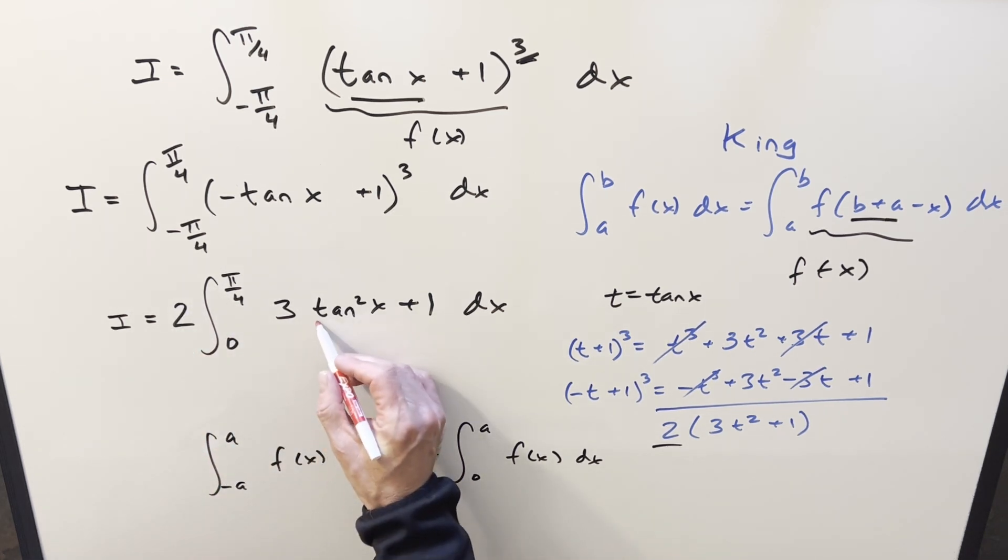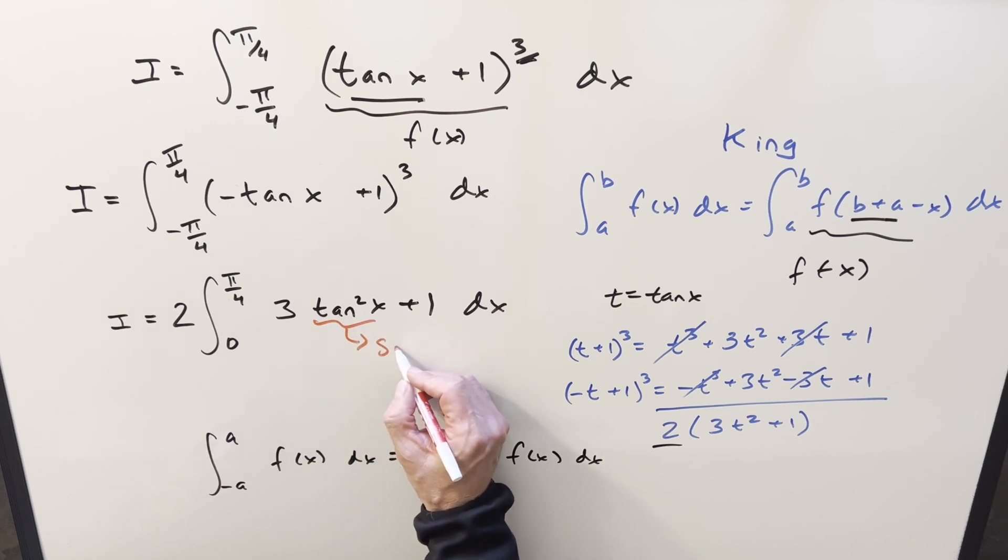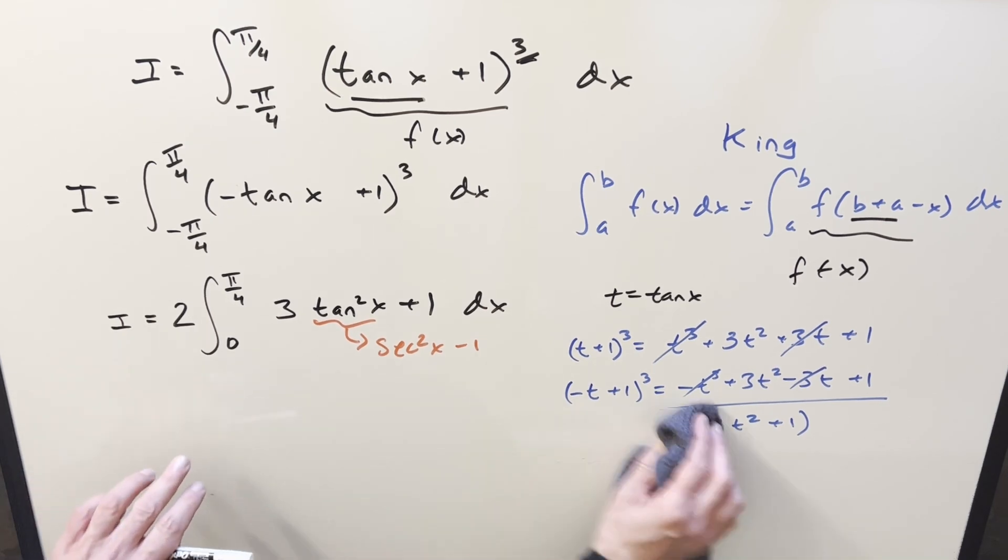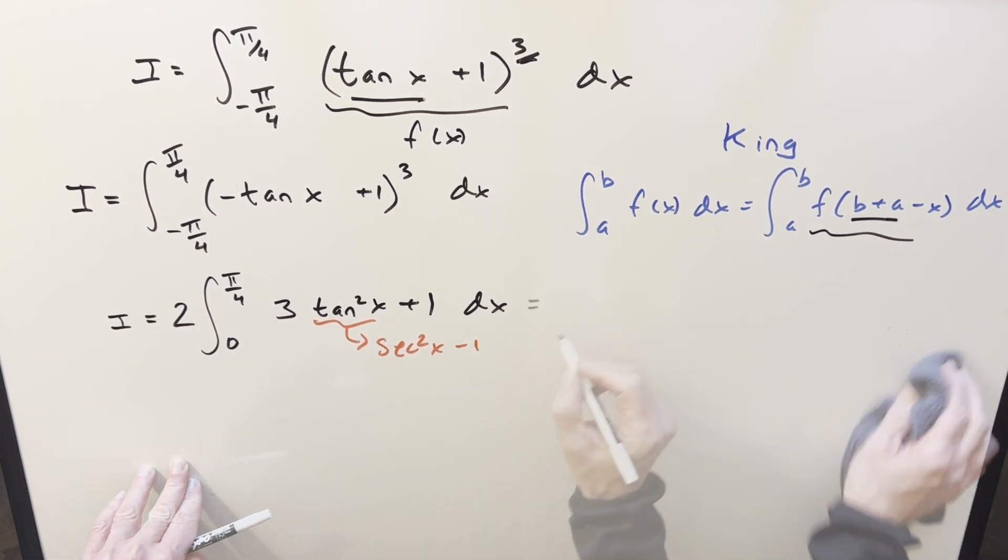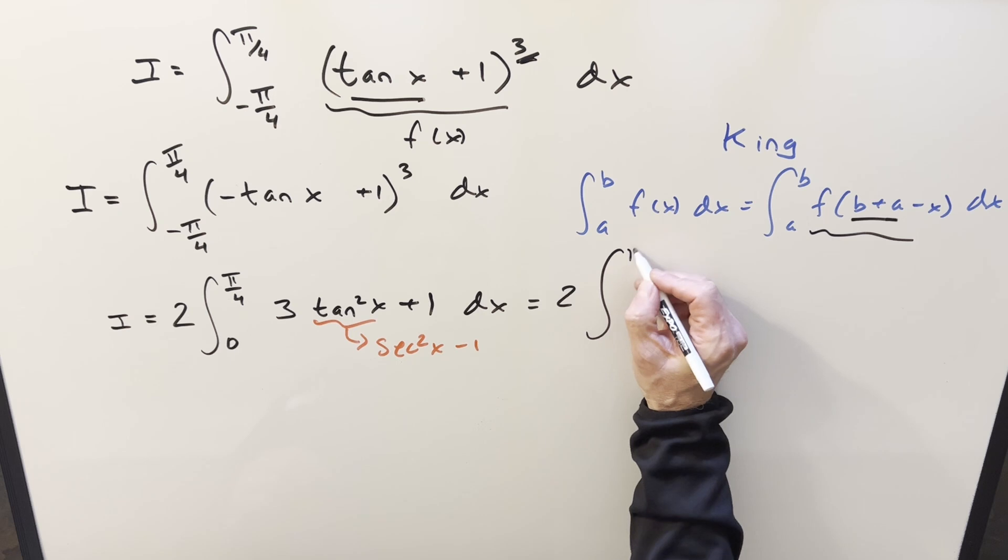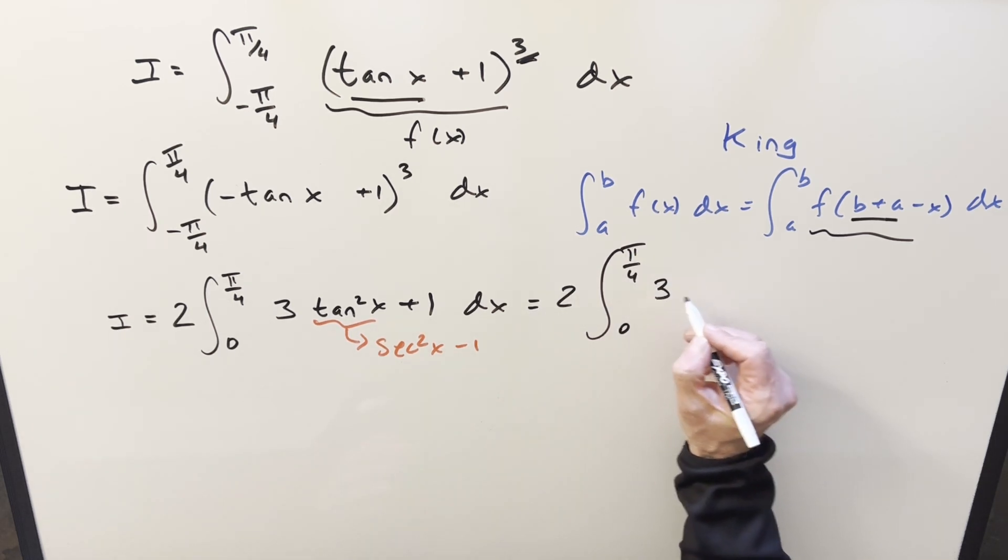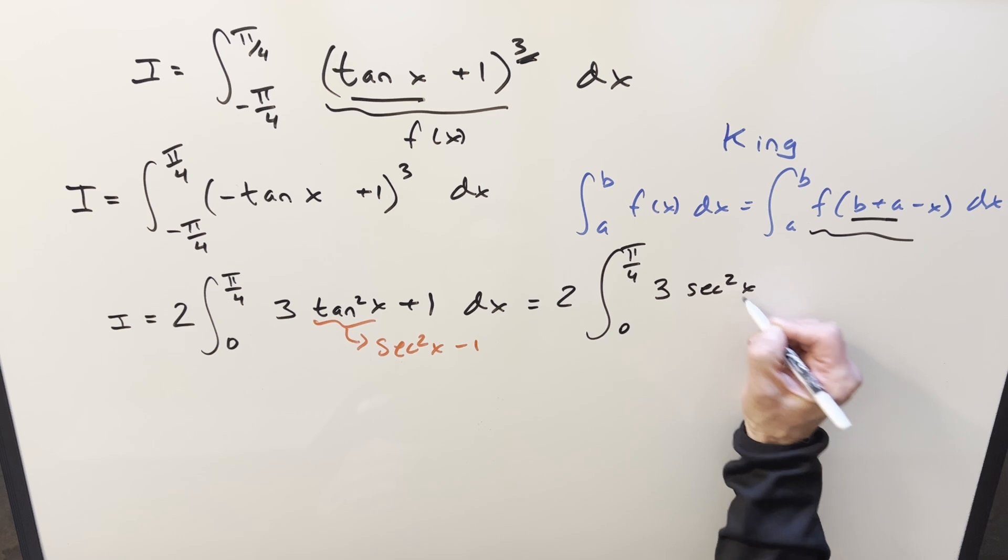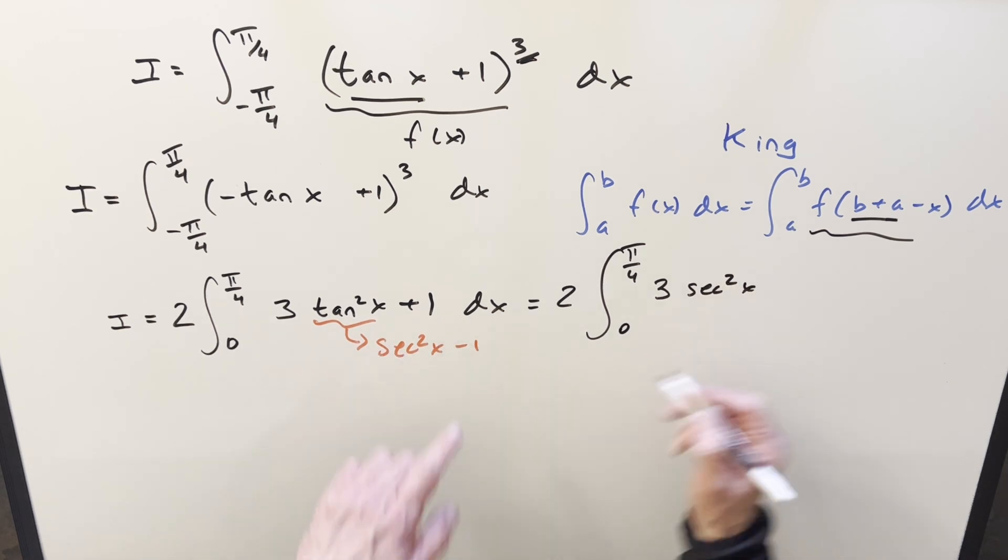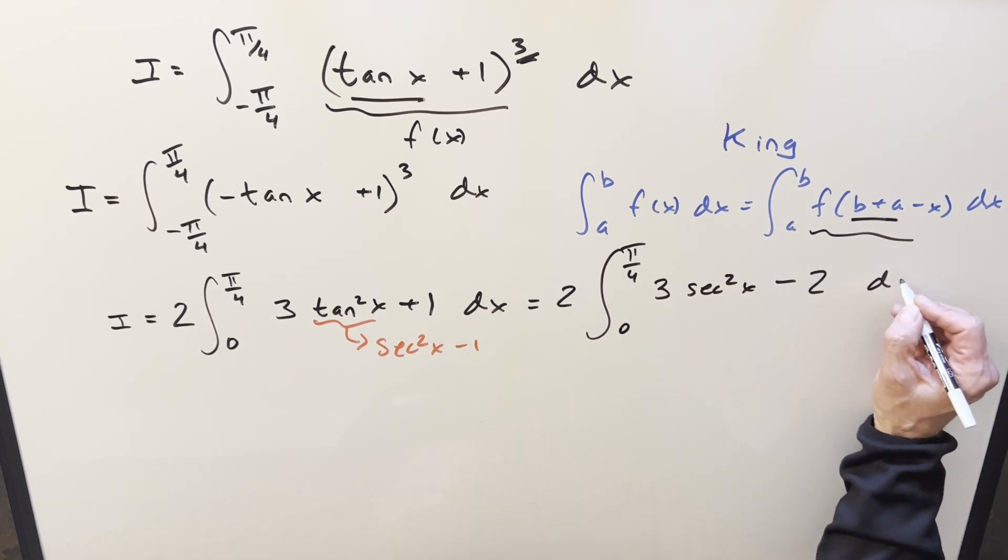And then for tan squared, let's just use the identity here. Tan squared is the same thing as secant squared x minus 1. So let me make a little space and see if we can bring this all together. What I'll do is we'll have our 2 out front. Then just need to distribute in the 3. So we have 3 secant squared x minus 3 plus 1 minus 2 dx.